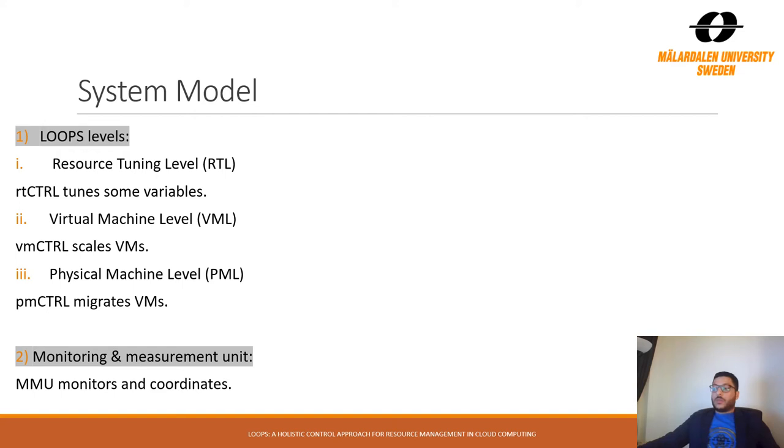The three levels work together to meet the required service level agreement. As I mentioned in the previous slide, a cloud data center can host a set of physical machines (PMs). Each PM can host a number of virtual machines (VMs), and they produce a specific throughput. LOOPS, the proposed approach, is dealing with the VMs.